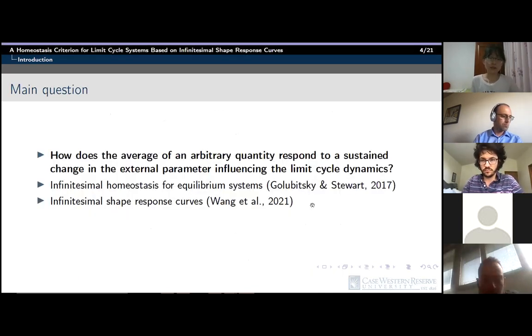So the main question is how the average of an arbitrary quantity in a limit cycle system responds to a sustained change in a parameter influencing the limit cycle dynamics. To study this question, we follow the concepts of infinitesimal homeostasis developed by Golubitsky and Stewart related to fixed point systems. And then we apply the infinitesimal shape response curve introduced by Dr. Wang to our limit cycle homeostasis analysis.